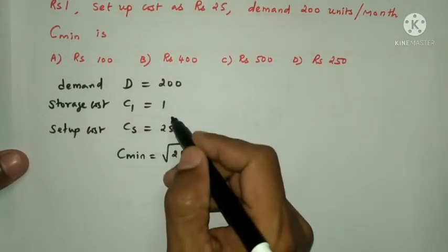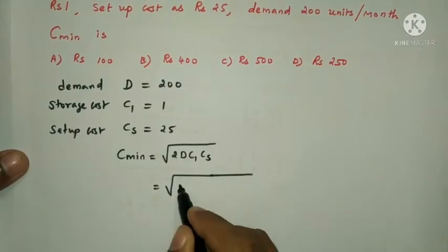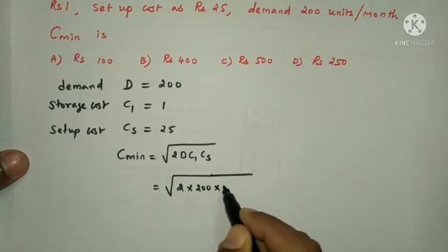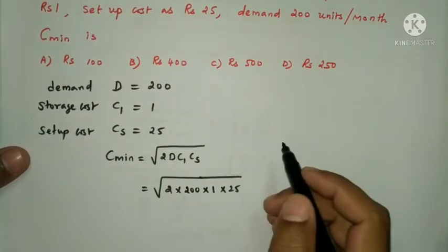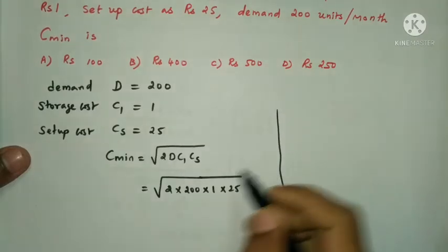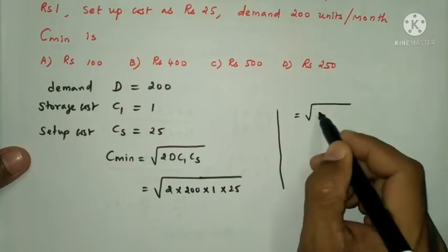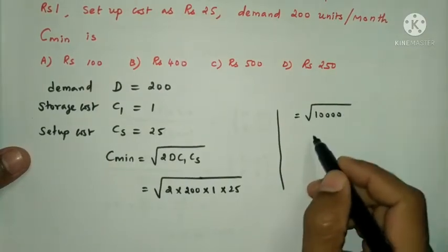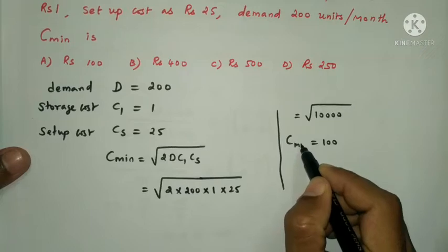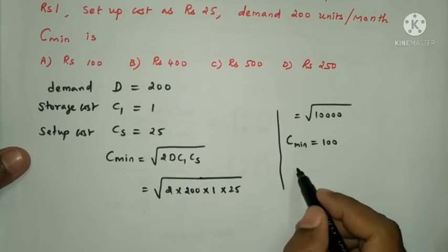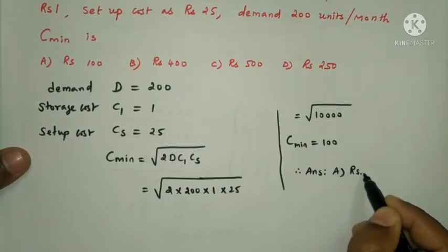Substituting: square root of 2 into 200 into 1 into 25, which equals the square root of 10,000. The answer is Rs.100.